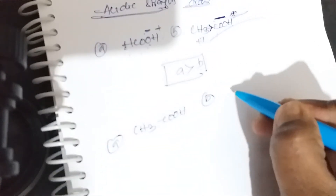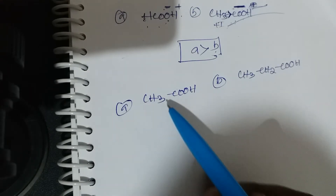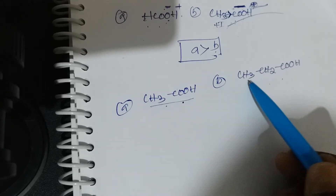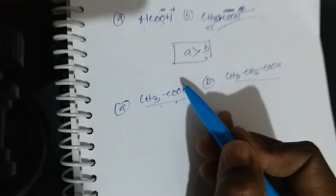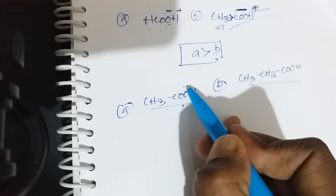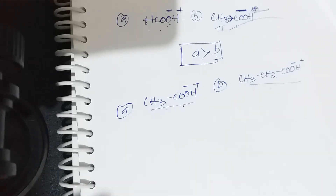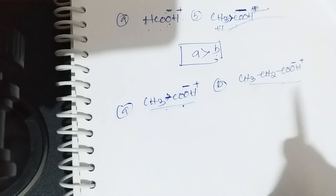The second example: A is CH₃COOH (acetic acid) and B is CH₃CH₂COOH (propanoic acid). Out of these two, which one is the better acid? In acetic acid there are two carbons, and in propanoic acid there are three carbons. Both have oxygen with a negative charge and hydrogen with a positive charge. Which one loses H⁺ more easily? In acetic acid, one methyl group is present — it is an electron-releasing group, so negative charge on oxygen increases.